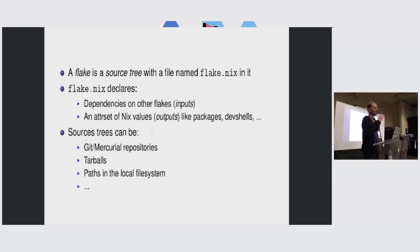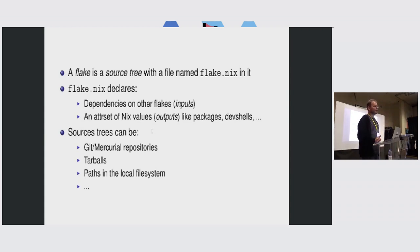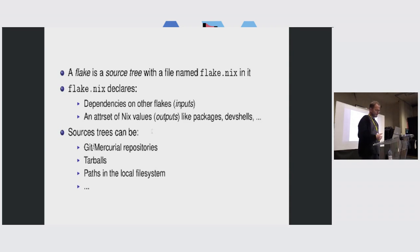It gives a way for these flakes to have dependencies on other flakes, so you don't need to have a mono repo anymore. In addition to dependencies on other flakes, flakes have so-called outputs, which are arbitrary Nix values like packages, developer environments, Hydra jobs, or whatever you want to export. The flake format doesn't really care about that. Source trees can be git repositories, tarballs, or paths in a local file system, but usually they're git repositories.